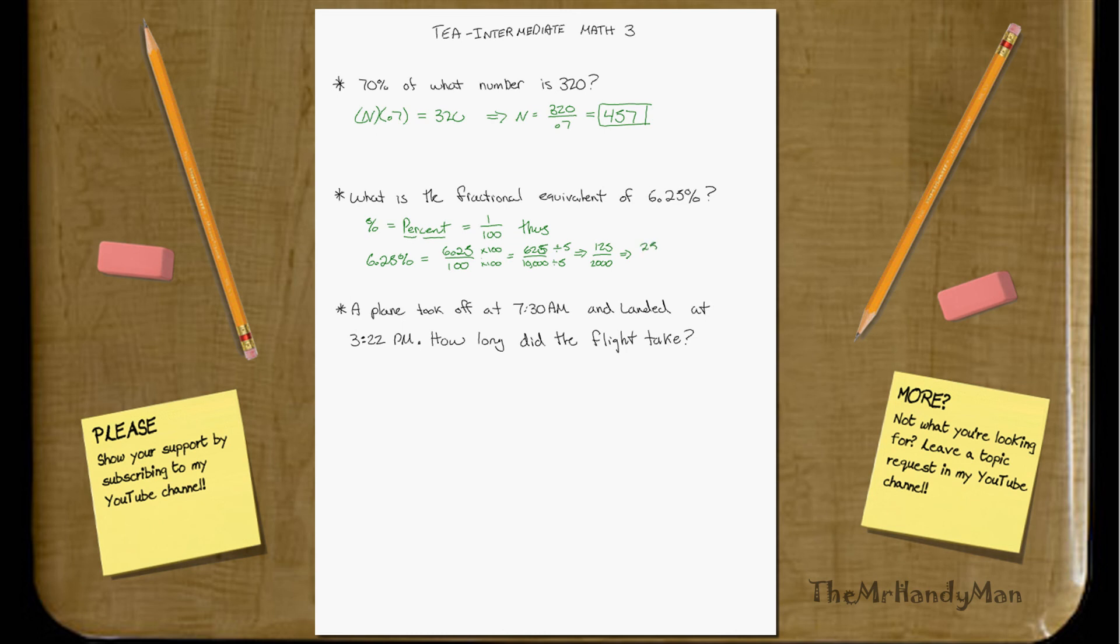Do it again. And you get 25 over 400. Keep going. 5 over 80. And once again, 1 over 16th. And that's your final solution. It's 1/16th.